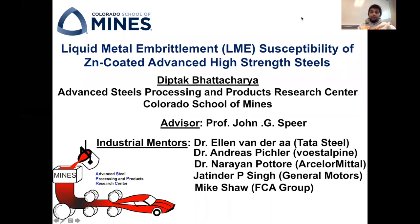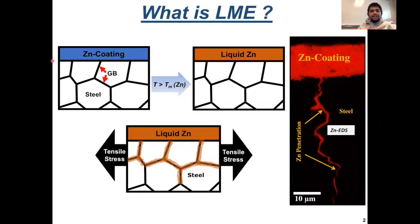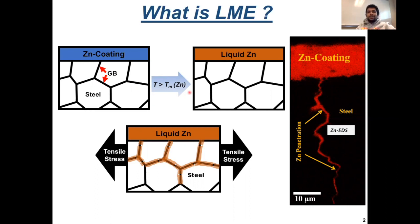This problem of liquid metal embrittlement has surfaced very recently and it's a huge concern for the automotive industry that relies so much on advanced high strength steels. Now let me first tell you what liquid metal embrittlement is. If we have a zinc-coated steel, the zinc coating is on the surface of the steel. The zinc coating has a much lower melting temperature than that of the steel. If we heat the zinc-coated steel to a temperature above the zinc melting temperature, then we will have liquid zinc on top of the solid steel. In that condition, if we simultaneously apply a tensile stress, then what we see is that the liquid zinc from the coating starts to penetrate into the steel along the grain boundaries of the steel.